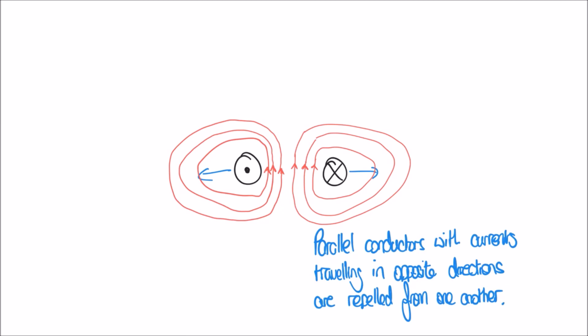We can say that parallel conductors with currents traveling in opposite directions are repelled from one another — they move away from each other because their fields are fundamentally opposed. I hope this video has been useful in exploring the basic electromagnetic field around a conducting wire and how those fields interact when the conductors approach one another.